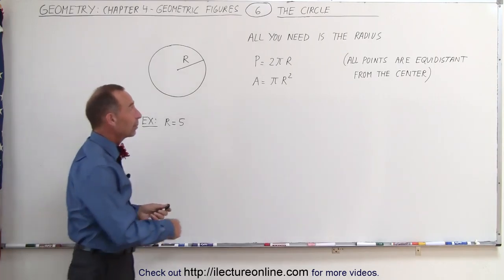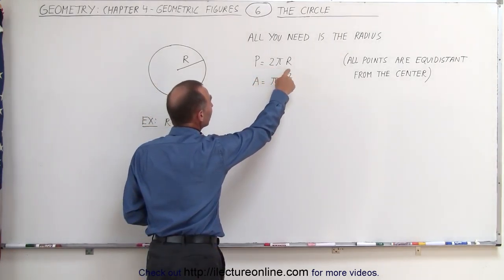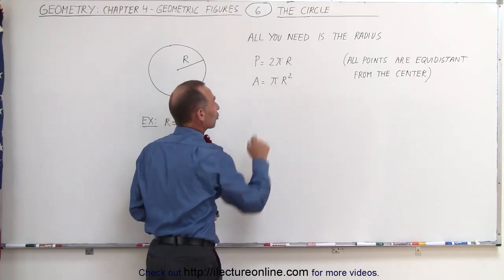To find the perimeter, it is equal to 2π times the radius. And if you want to find the area, it's equal to πr².